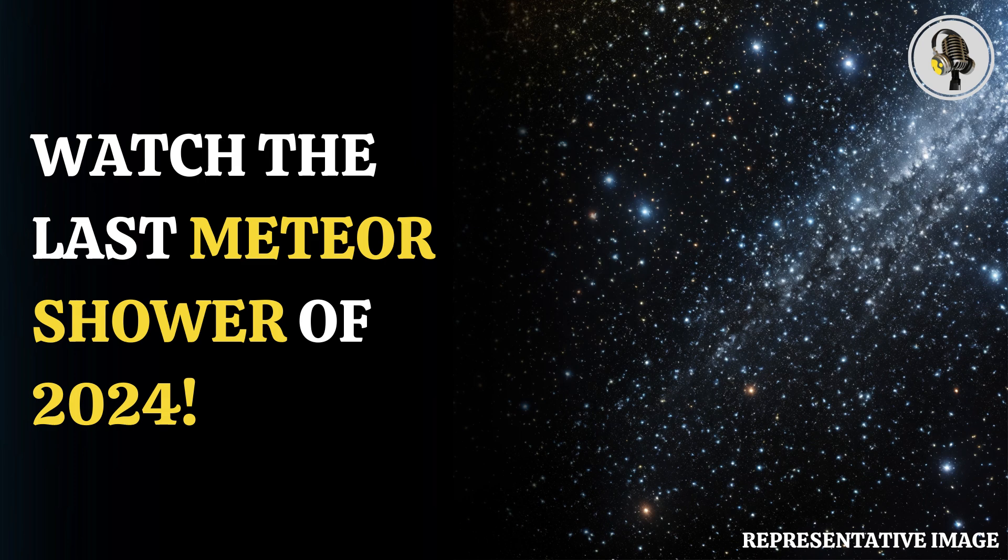The Ursid meteor shower will be visible from December 17 to 26, with the best viewing on the night of December 21 and 22. The Geminid meteor shower, active from December 2 to 21, features meteors that are typically yellow, but may also appear white or green, according to NASA.